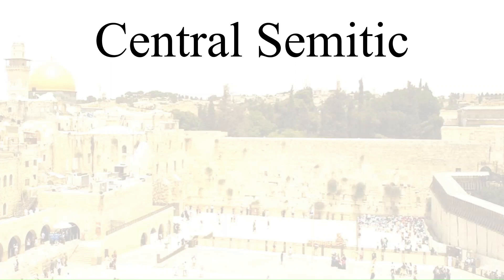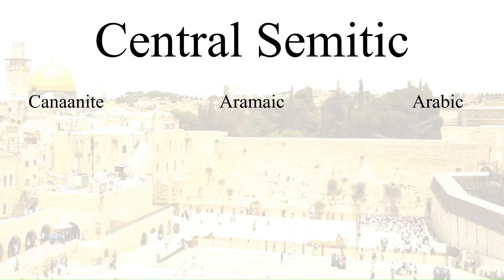Central Semitic can be divided three ways: Arabic, Canaanite, and Aramaic. It's worth mentioning that the Ugaritic and Amorite languages have not been classified any further and are just Central Semitic, as well as being extinct. Canaanite languages, also called Northwest Semitic, include Hebrew, Phoenician, Amorite, Moabite, and Edomite, Hebrew being the only surviving one today. We must remember that it is the Phoenicians who gave us the alphabet, and the language once spread across the Mediterranean.